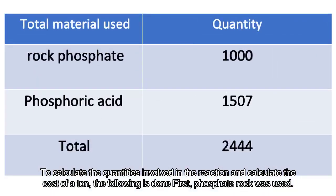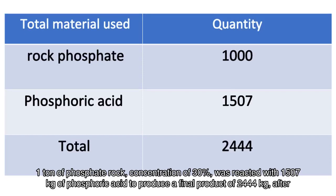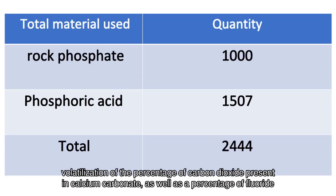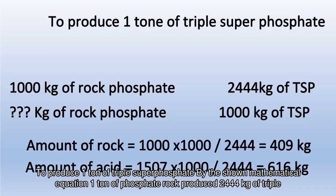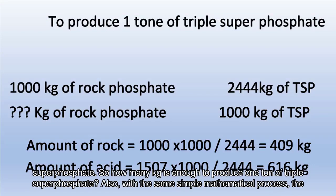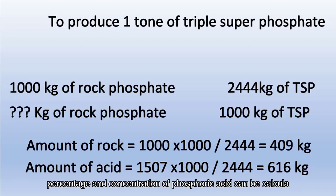To calculate the quantities involved in the reaction and the cost per tonne: 1 tonne of phosphate rock at 30% concentration was reacted with 1507 kilograms of phosphoric acid to produce a final product of 2444 kilograms of triple superphosphate, after volatilization of carbon dioxide from calcium carbonate and a percentage of fluoride. To produce 1 tonne of triple superphosphate, since 1 tonne of phosphate rock produces 2444 kilograms, the required amounts can be calculated by the same mathematical process, including the percentage and concentration of phosphoric acid.